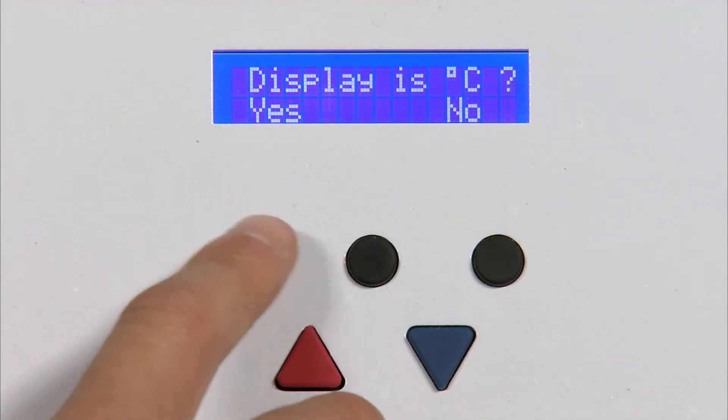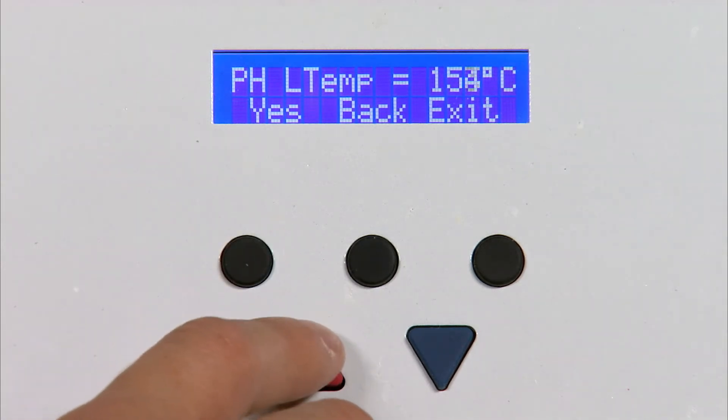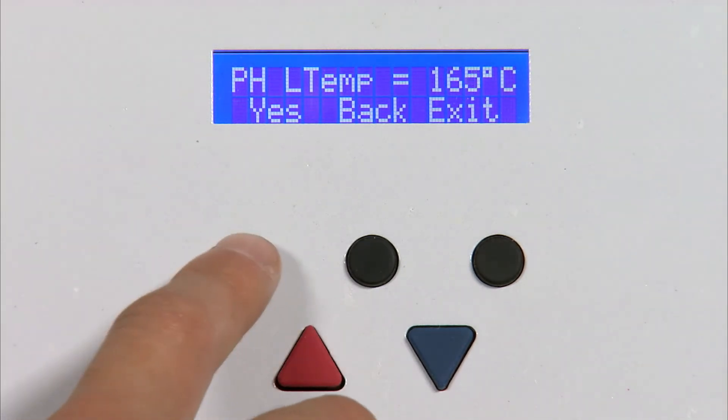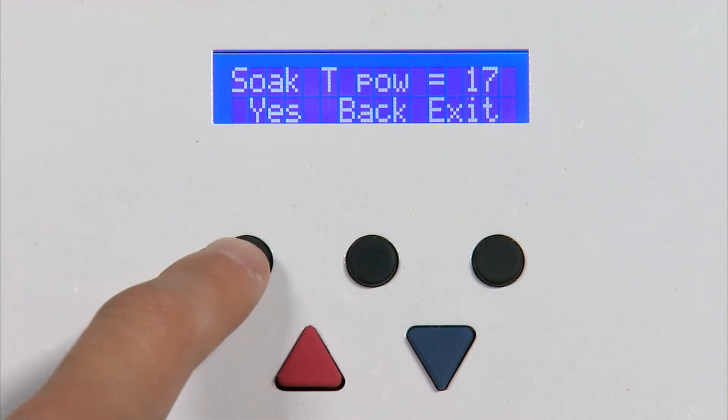Once everything is secured, we can input a profile to the machine. Input the temperature and time for each of our three zones. The bottom side heater can be adjusted by temperature, whereas the top side heater is controlled by a power level from 1 to 20.